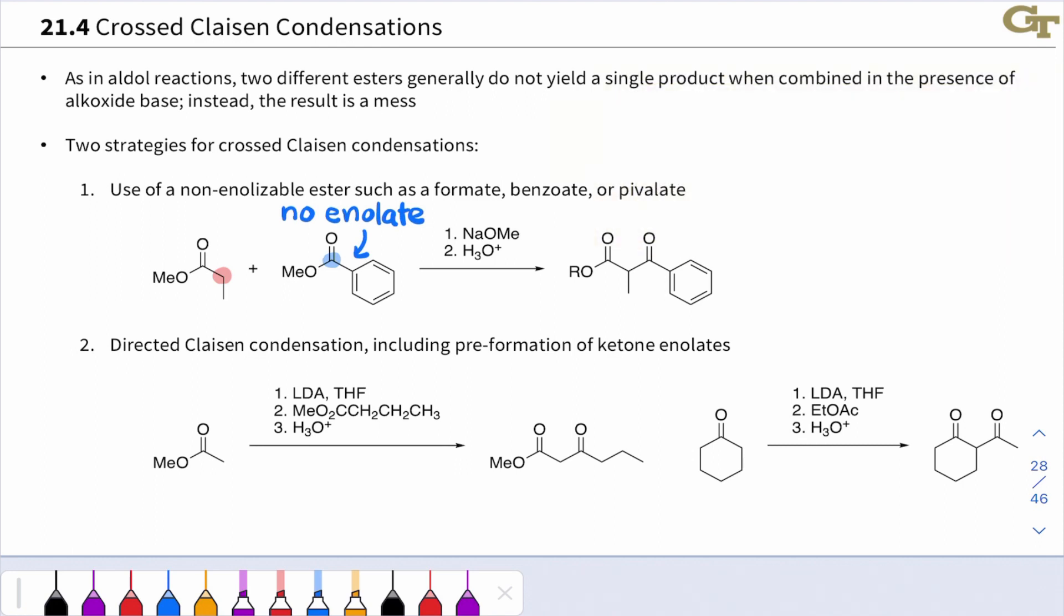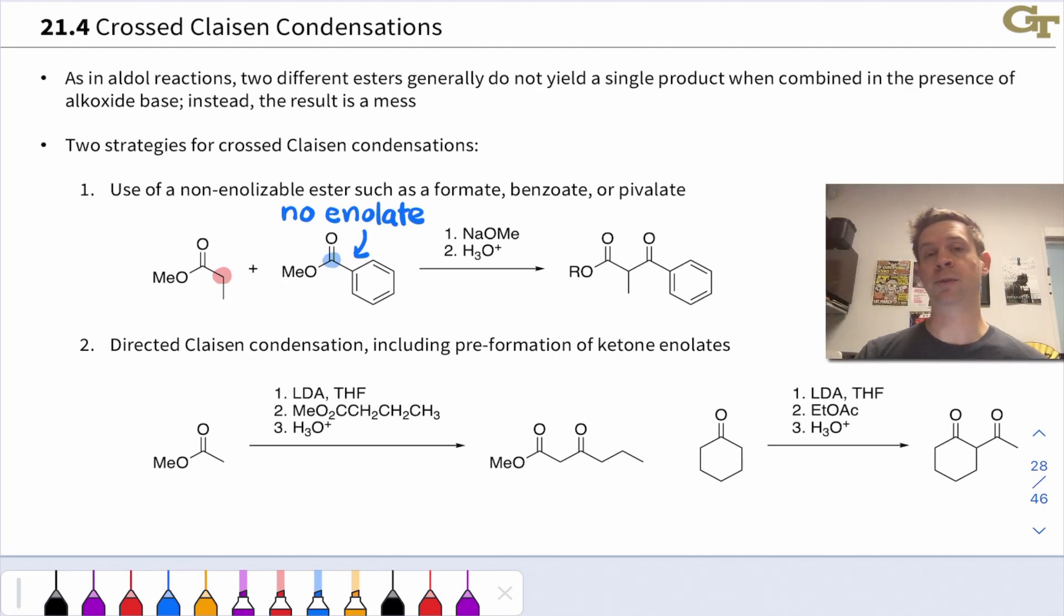Directed Claisen condensation is also possible. And the idea here is that we pre-form an ester or ketone enolate. This will also work with ketones. And then we add the electrophile slowly to avoid equilibration of the enolates and ensure that the electrophile that we add in slowly to the solution of the enolate acts as the electrophile. Notice also in both of these reactions that we need that acidic workup at the end because the mechanism here is exactly the same as the dimerization Claisen mechanism that we've seen already. The reaction sits at the stabilized enolate product and we need to add acid to protonate that to isolate the neutral product.